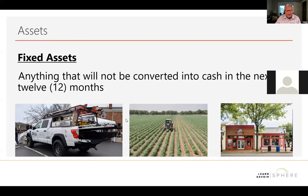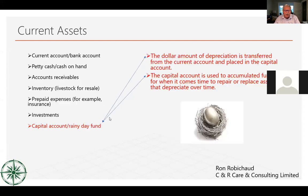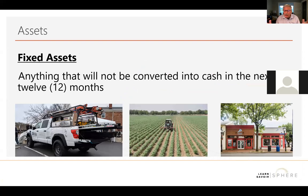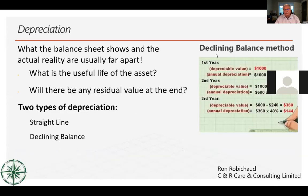Fixed assets are anything we're not going to convert into cash in the next 12 months — that's the simple distinction from current assets. When making a purchase, put it in the right place: inventory goes in current assets, a piece of equipment goes in fixed assets. Fixed assets include land, buildings, furnishings, livestock for breeding, and goodwill.